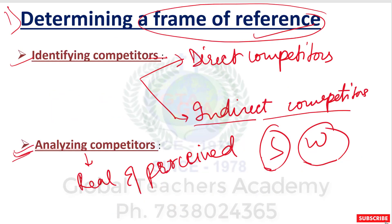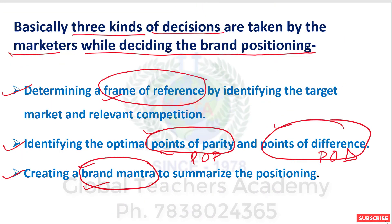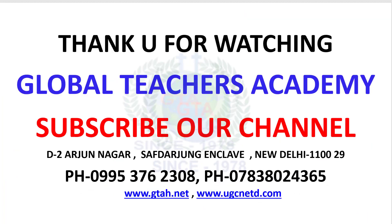So these are the three kinds of decisions that should be taken by marketers while deciding brand positioning: first, identify and analyze competitors to determine a frame of reference; second, identify points of parity — both category and competitive — and points of difference, ensuring an appropriate balance between POP and POD; and third, create a brand mantra, which is the last and most important decision. For further updates, please subscribe to our channel. Thank you.